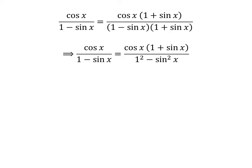The denominator of the right hand side is in the form of a minus b times a plus b. Since a minus b times a plus b equals square of a minus square of b, cosine of x upon 1 minus sine of x is equal to cosine of x times 1 plus sine of x, upon square of 1 minus square of sine of x.